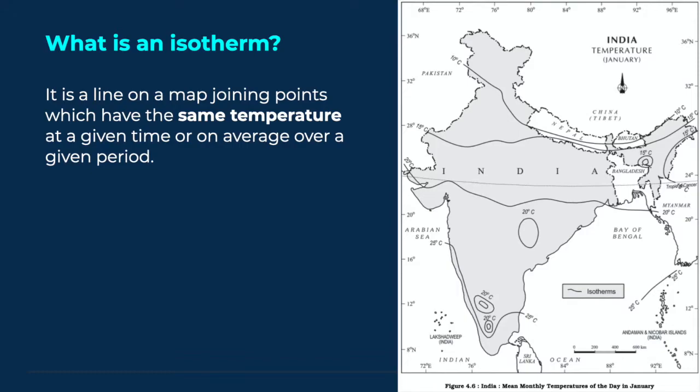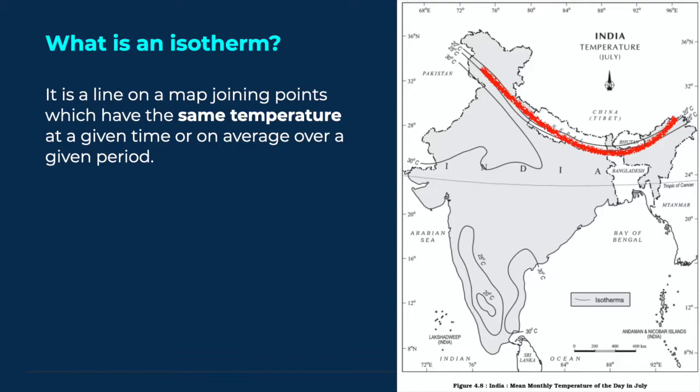To state it simply, isotherms are lines of equal temperature on Earth. As you can see on this map of daytime mean temperature in January, the 20 degree centigrade isotherm runs almost over the Tropic of Cancer. By July, the 20 degree line moves northwards. Similarly, we have isotherm lines over oceans too.